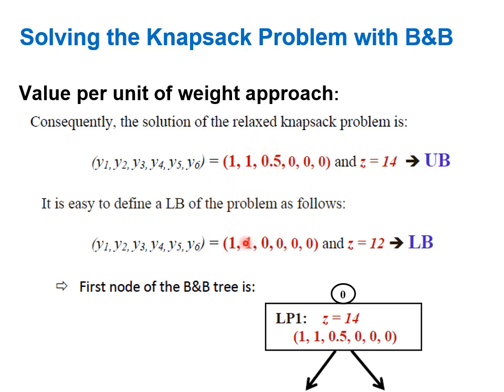The corresponding objective function value of this rounded-down solution is six plus six equals twelve. This is a feasible integer solution. So instead of using minus infinity as the lower bound, we use twelve as the incumbent solution. Using such an integer feasible solution allows the algorithm to terminate sooner.